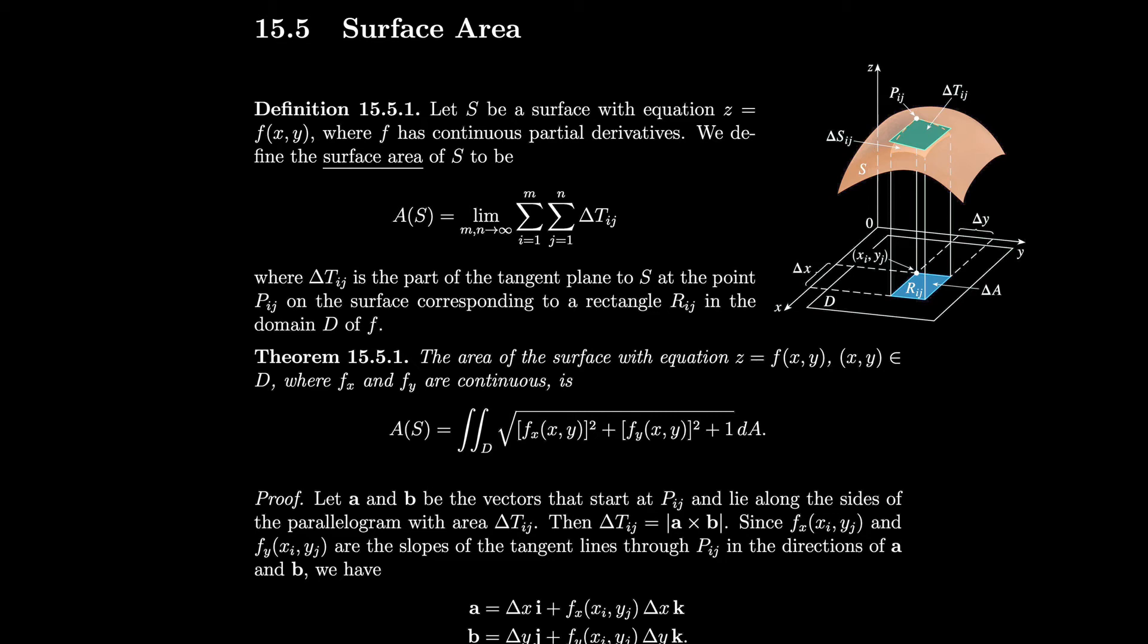Section 15.5, surface area. Let S be a surface with equation z equals f of xy, where f has continuous partial derivatives. We define the surface area of S to be the limit of the double Riemann sum of delta tij, where delta tij is the part of the tangent plane to S at the point pij on the surface corresponding to a rectangle rij in the domain d of f. So here's what we do. We draw some little rectangle in the domain of f, and then we look at the corresponding patch of the surface.